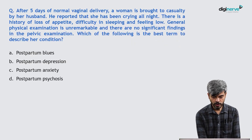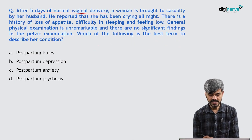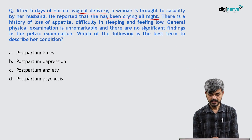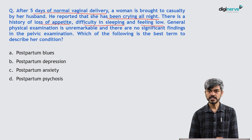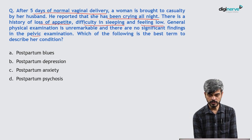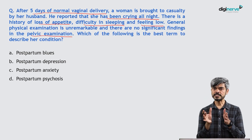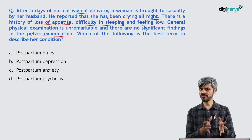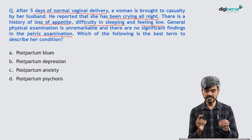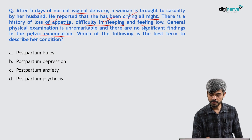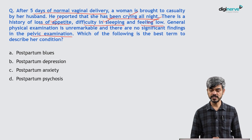After 5 days of normal vaginal delivery, a woman is brought to casualty by her husband. He reports she has been crying all night. There is history of loss of appetite, difficulty sleeping, and feeling low. General physical examination is unremarkable, no significant findings on pelvic examination, no other complications. Which is the best term to describe her condition? This woman has come in the first week after delivery and has developed certain depressive symptoms — crying all night, loss of appetite, insomnia, feeling low, sad mood.